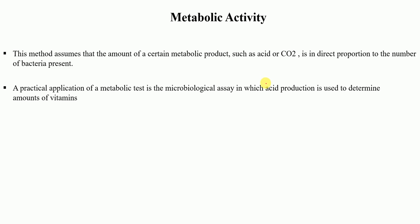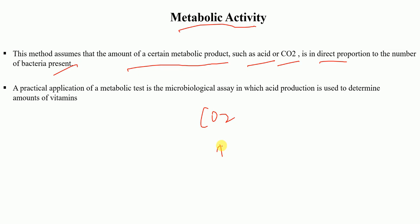The next method used to measure bacterial growth is metabolic activity. This method assumes that the amount of certain metabolic products — such as acid or carbon dioxide — is in direct proportion to the number of bacteria present. We measure carbon dioxide or acid released by the bacteria rather than counting bacteria directly. The larger the amount of carbon dioxide or acid, the more bacteria are present; the smaller the amount, the fewer bacteria. A practical application of metabolic testing is the microbiological assay, in which acid production is used to determine the amount of vitamins.